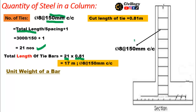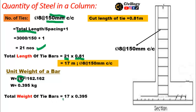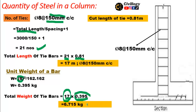For the weight of tie bars, the unit weight formula is d² ÷ 162, and the diameter of the tie bar is 8 millimeters, giving a unit weight of 0.395 kg per meter. The total weight of tie bars equals 17 meters times 0.395, which equals 6.71 kg.